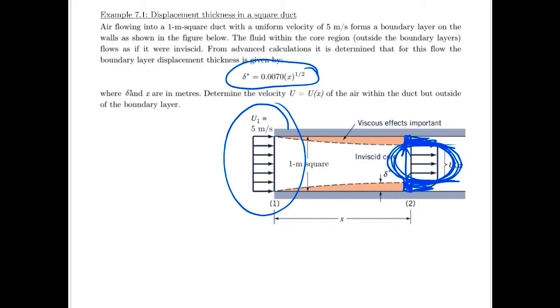So how do we calculate the velocity in the sped up region? Well, the displacement thickness tells us the location of where the wall would be if the whole rest of the flow had a nice even velocity profile at capital U.